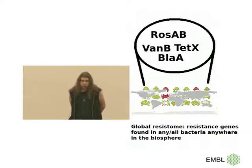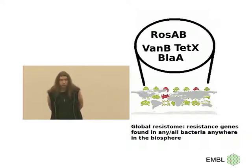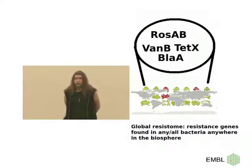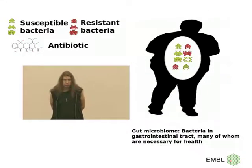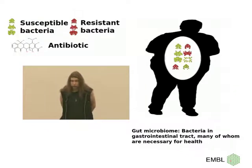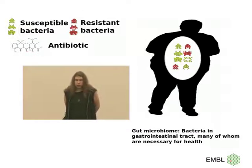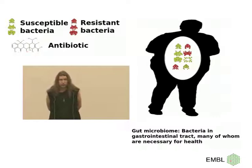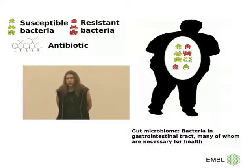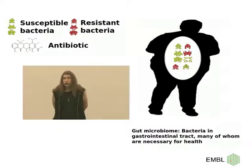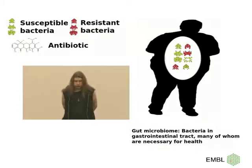We can talk then of environmental resistomes — soil resistance, water resistance — but also of host-associated ones, such as human-associated resistomes, including the resistance genes found in the bacteria dwelling in the human gastrointestinal tract. This is of particular interest to us because there are hints that the gut may in fact work as a reservoir from which resistant bacteria, or at least the genes giving them this resistance, can be vectored out into other body sites and cause disease which would then be more difficult to treat using antibiotics.